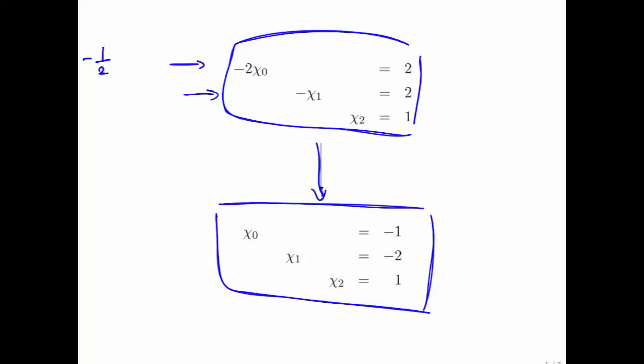And the way we do that is we multiply this first row by one half. We multiply the second row by minus one. And we multiply the third row, or the third equation, by one. And when you do that, you end up with this right here. And lo and behold, this is the solution to the original linear system.